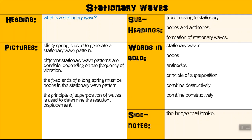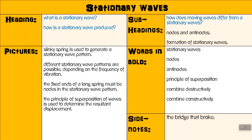From the subheading 'from moving to stationary,' another question that might pop up is: how is a stationary wave produced? And from subheadings: how does a moving wave differ from a stationary wave? If we look at nodes and antinodes: how do nodes and antinodes form? You can ask any other question you could think of. And from the subheading 'formation of stationary waves': how is a stationary wave produced?